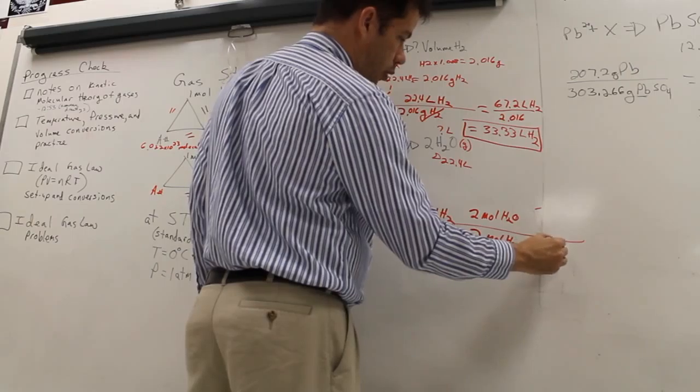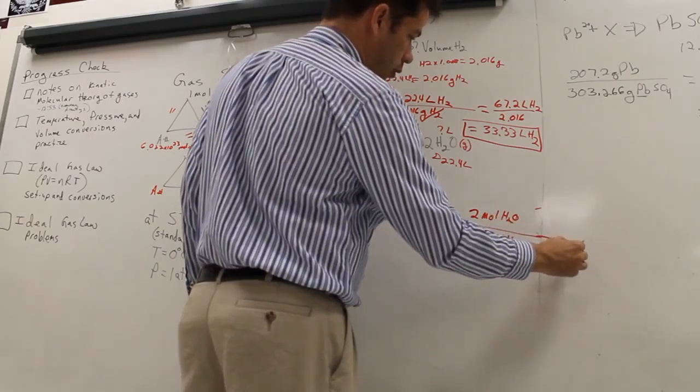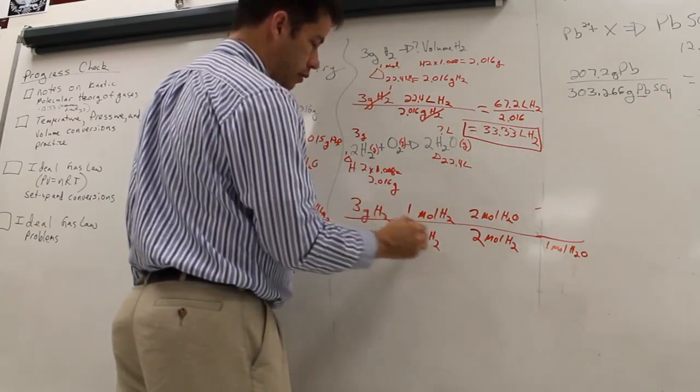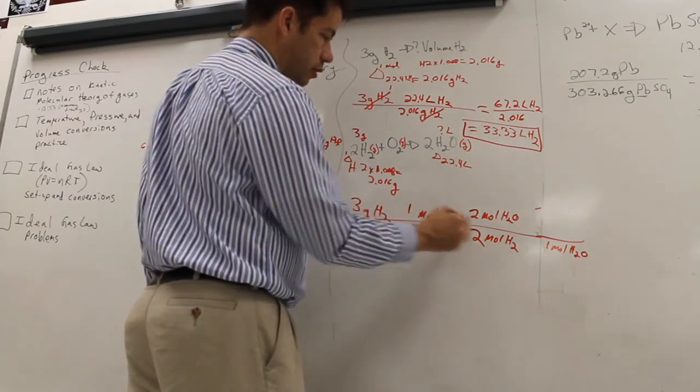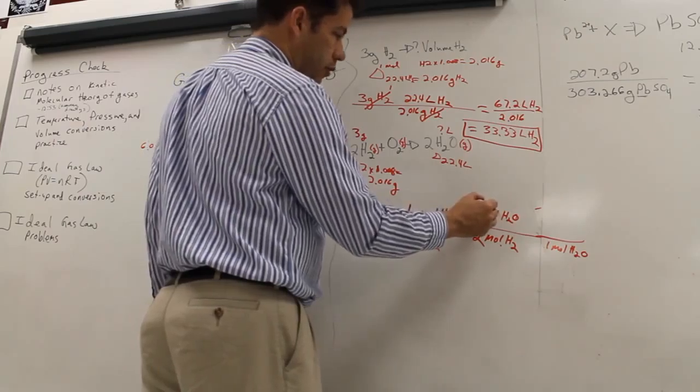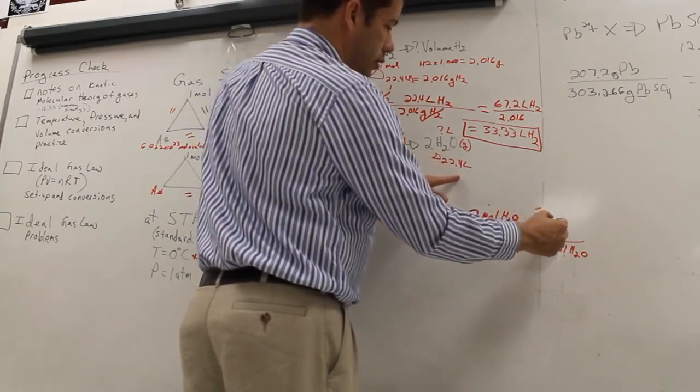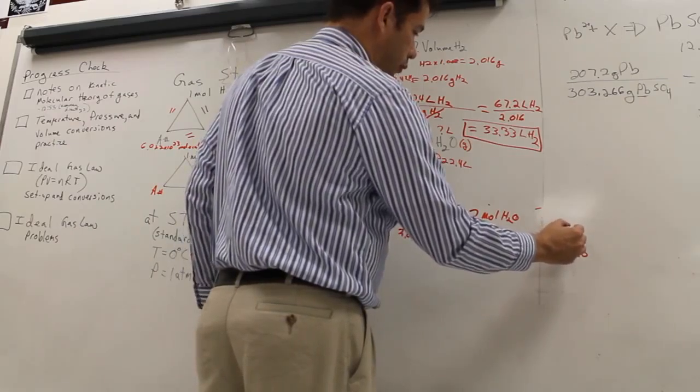So in one mole, note, why is it mole? Because I got moles up here. So remember, we do the diagonal thing. H2, H2. Moles H2, moles H2. Moles H2O, moles H2O. What am I converting it to? I'm converting it to liters. So 22.4 liters.